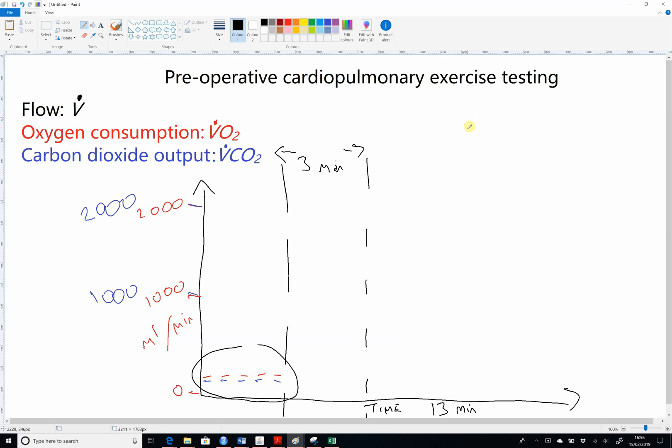They've either got on their nose a nose peg like a swimmer would wear. And in their mouth, they've got a mouthpiece with a spit collection at the bottom because it makes you salivate, to which is connected the measuring device that captures flow, oxygen consumption and carbon dioxide output. Alternatively, you can have a tight fitting mask that fits over the nose and the mouth.